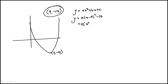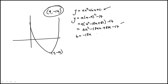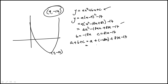Expanding: a(x - 9)² - 14 gives ax² - 18ax + 81a - 14. Comparing to ax² + bx + c, we get b = -18a and c = 81a - 14. So a + b + c equals a + (-18a) + (81a - 14), which simplifies to 64a - 14.